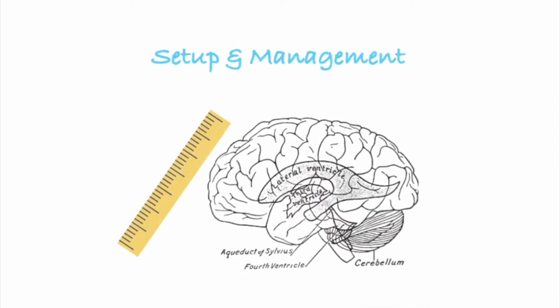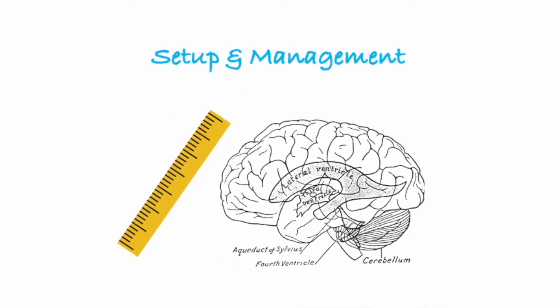Next let's talk about setup and management. Remember that the number that is set by the provider on the actual transducer or drain itself is the number that the ICP needs to reach in order to drain over. What I mean by that is if you set the ICP to 20, the ventricular system is only going to drain when ICP goes over 20.